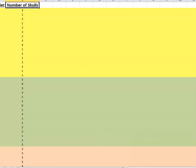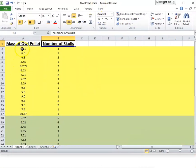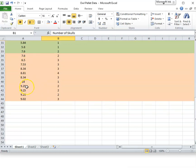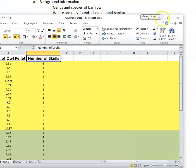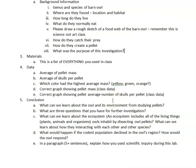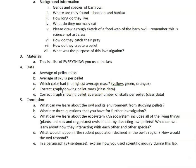On the data sheet you can see there are three color groups: yellow, green, and orange. I want you to analyze which group has the highest average pellet mass — yellow, green, or orange. Then I want you to hand-draw a correct graph showing pellet mass and a correct graph showing average number of skulls, picking one of those color groups. Think about what type of graph to use — a line graph, bar graph, or pie chart — whichever best tells the story of the data.